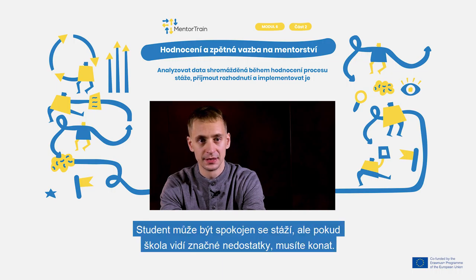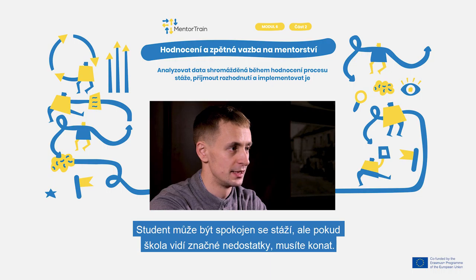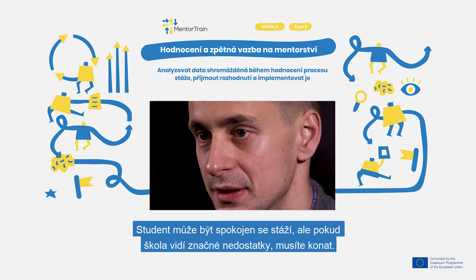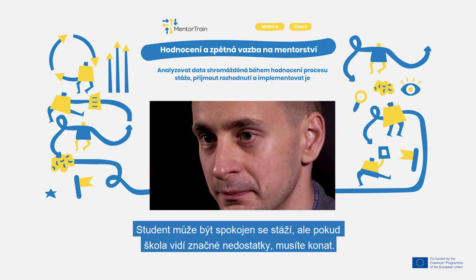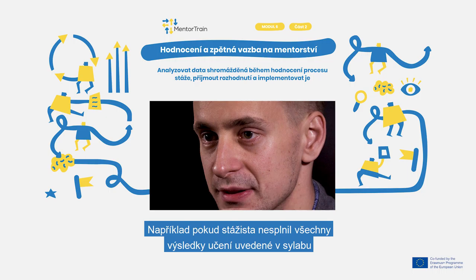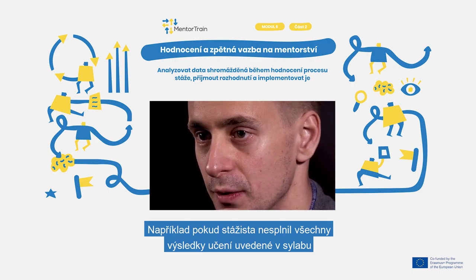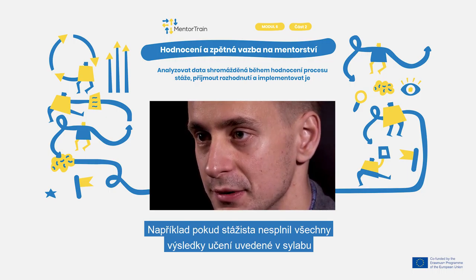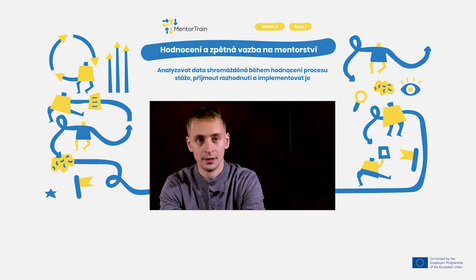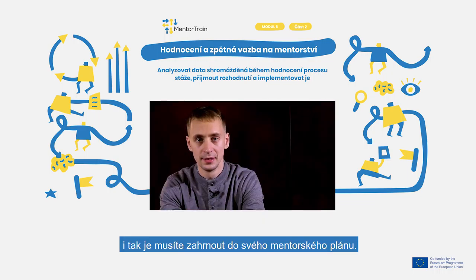A student might be satisfied with the apprenticeship, but if the school sees significant shortcomings, you still need to take action. For example, if the apprenticeship did not fulfill all the learning outcomes stated in the syllabus, you still need to include them in your mentoring plan.